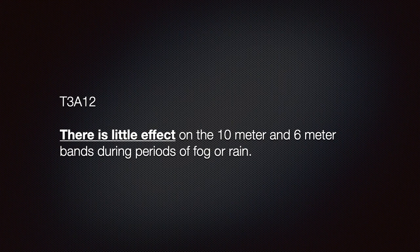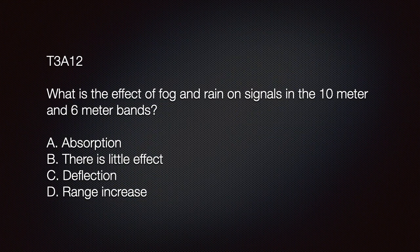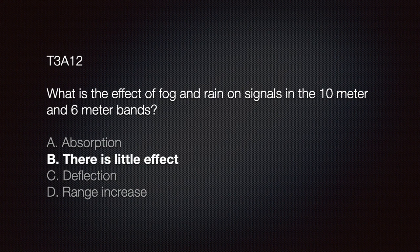We need to know that there is little effect on the 10-meter or 6-meter bands during periods of fog or rain. Fog and rain primarily have adverse effects in the microwave bands. You've likely listened to FM radio in your car during rain or fog with no issues. The exam question: What is the effect of fog and rain on signals in the 10-meter and 6-meter bands? Options: A — absorption; B — little effect; C — deflection; D — range increase. The correct answer is B: there is little effect.